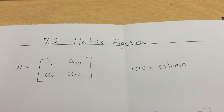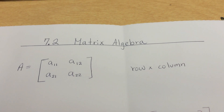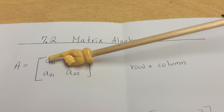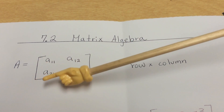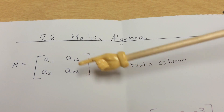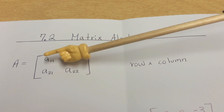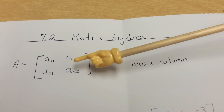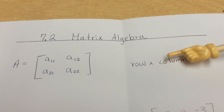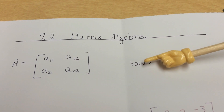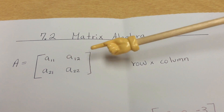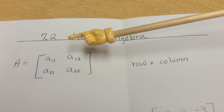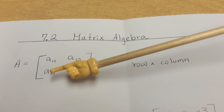This section covers 7.2 matrix algebra. A matrix is presented in bracket format, containing different cells or elements. When reading a matrix, we always read it by row first, then by column. The row goes horizontally and the column goes vertically.